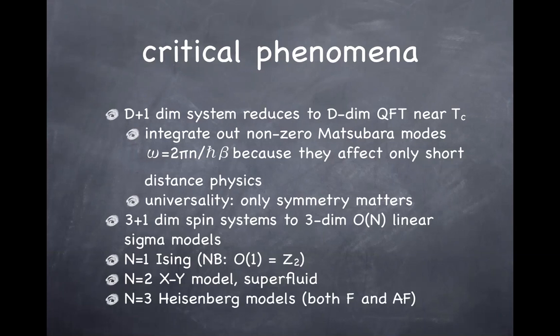Going to N=3, that's the classic Heisenberg model, and this is true for both the ferromagnet and the antiferromagnet.